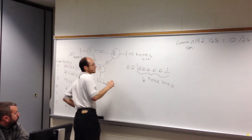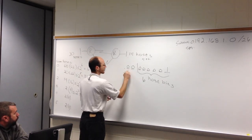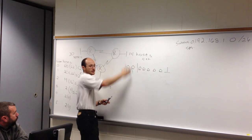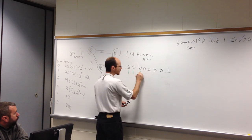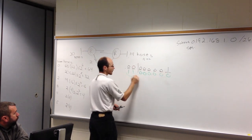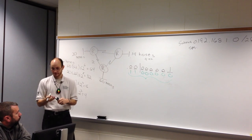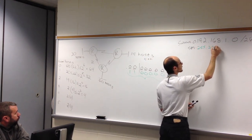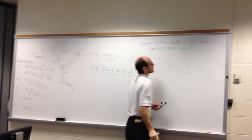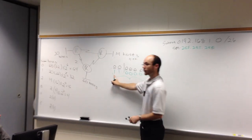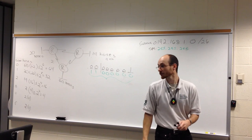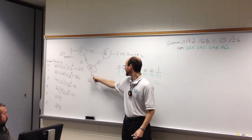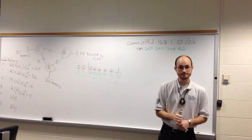The subnet mask has all ones in the network portion and all zeros in the host portion — that's how the computer identifies the host part. Converting those binary bits back to decimal: originally 24 ones give 255.255.255, and the two stolen bits in the fourth octet — one in 128 and one in 64 — give 192. So the subnet mask is 255.255.255.192 for subnet zero.